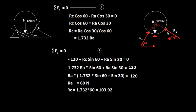To find the reactions at A and C, we apply the equilibrium conditions of forces. The mass of the body acts vertically downwards, so it has no horizontal component. However, the reactions at A and C act at angles other than 90 degrees to the horizontal, so they each have components in the horizontal direction.